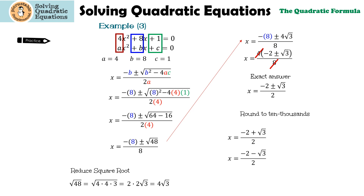As I said before, a lot of books are going to ask you to round; I rounded to the nearest ten-thousandths. You need to use a calculator. The rounded answers are negative 1.8660 and negative 0.1340.